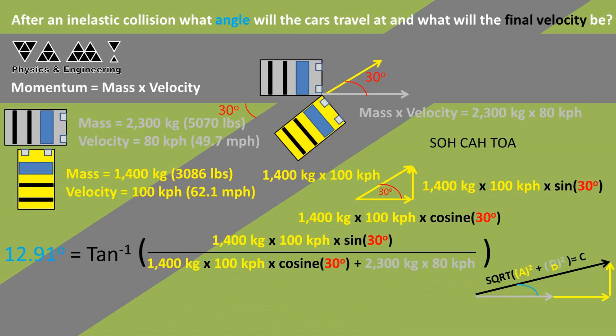Now we can take the inverse tangent of the opposite leg over the adjacent leg of this triangle we just found, the TOA portion of SOHCAHTOA. We get an angle of 12.91 degrees above the horizontal road.